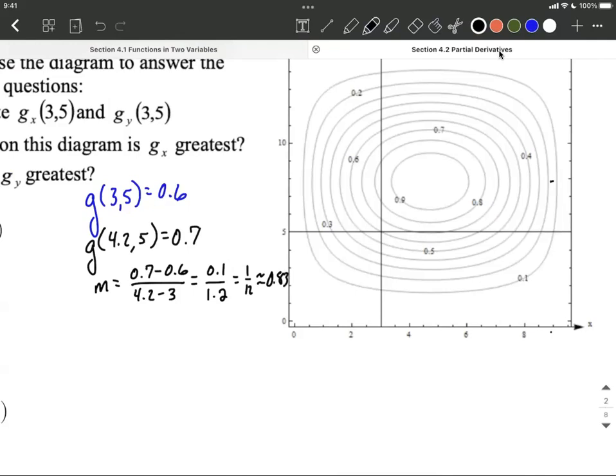Nothing said that we had to go from the point we really care about to the right all the way over here though. Instead, we could have gone from here and gone to this point to the left, right about there on our diagram. That would have corresponded with g of 2.4 for an x value comma 5, went with the next smaller contour line that goes around at 0.5.